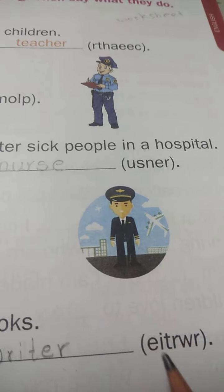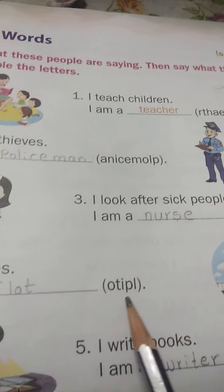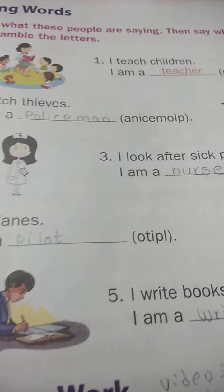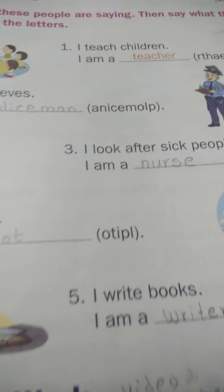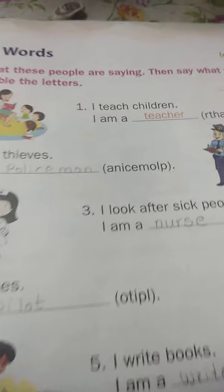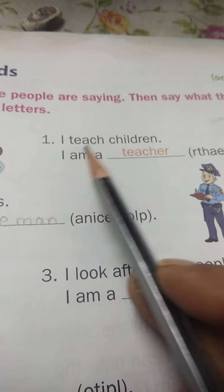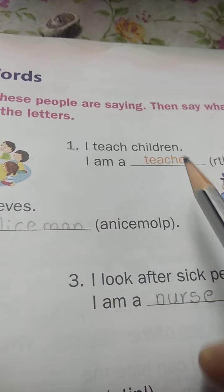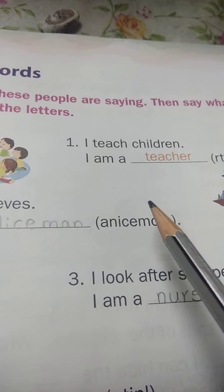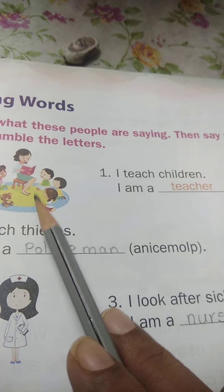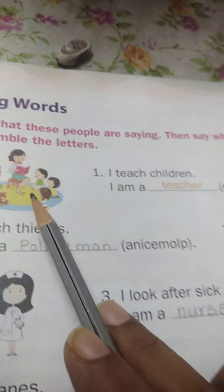Here, unscramble verses are there in the brackets. You have to make a new word to fit these sentences. Did you understand? Once again, I will explain. I teach children — teacher. She is telling: I teach children, I am a teacher.